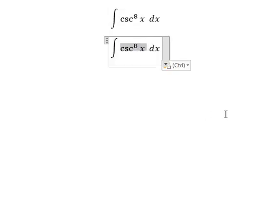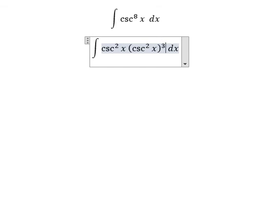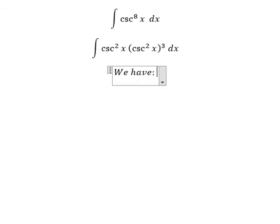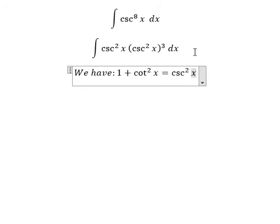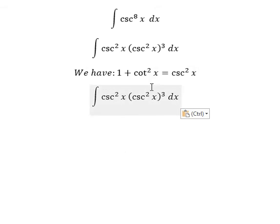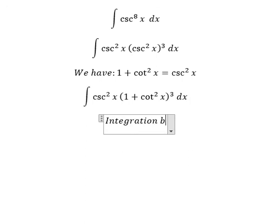We can write this as cosecant squared x multiplied by cosecant squared x to the power of three. Because two plus six equals eight, we have one plus cotangent squared x, which equals cosecant squared x. So I will put this one here. Next I will need to use integration by substitution.